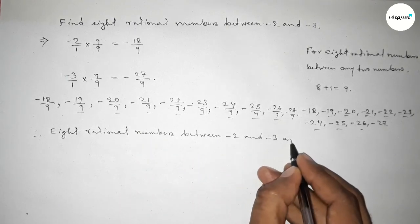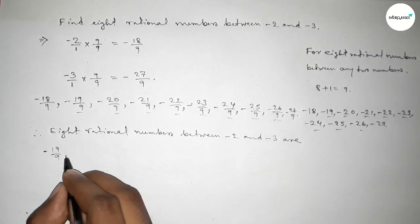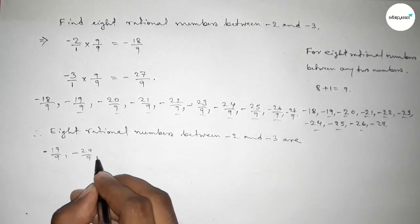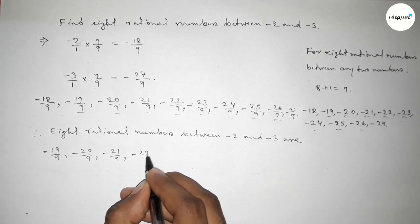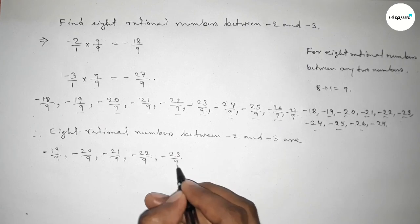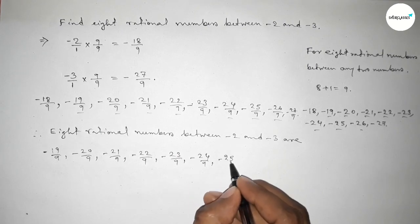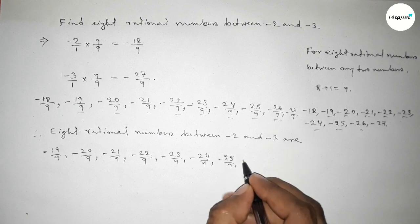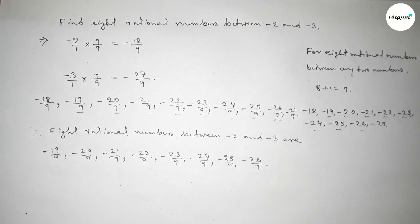Therefore, the required eight rational numbers between minus two and minus three are: minus 19 over 9, minus 20 over 9, minus 21 over 9, up to the last one, minus 26 over 9.